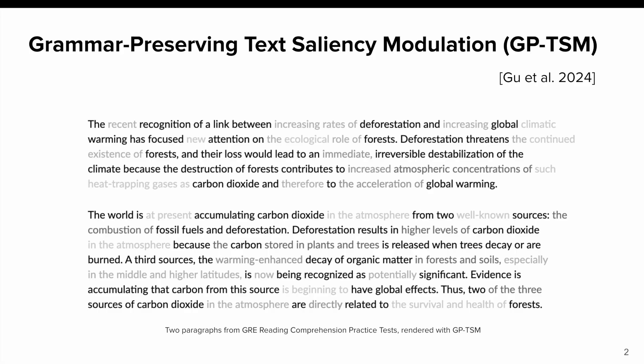Recent work has introduced a novel text rendering technique called Grammar-Preserving Text Saliency Modulation, or GPTSM. Powered by a large language model, GPTSM deemphasizes recursive levels of detail beyond the core meaning of a passage by rendering them with successively lighter but still legible opacity. Prior studies have demonstrated that GPTSM results in better reading experience and higher reading efficiency, but the mechanism by which it achieves this effect is yet unknown.